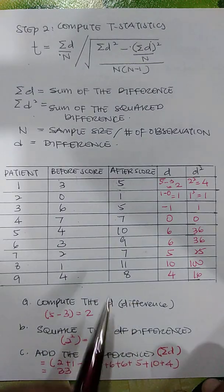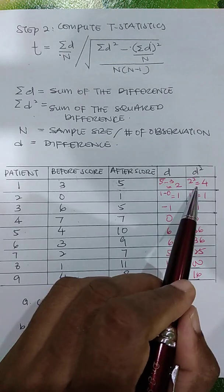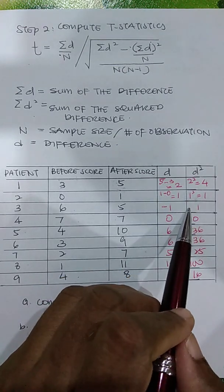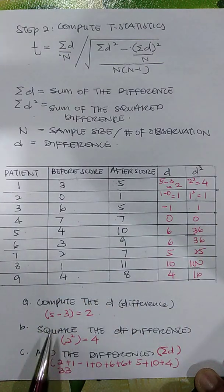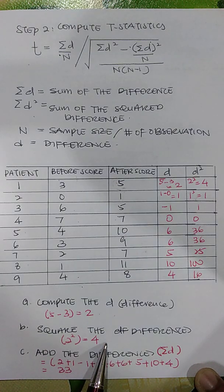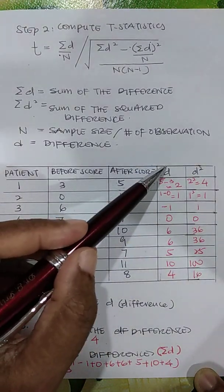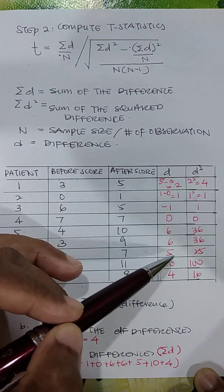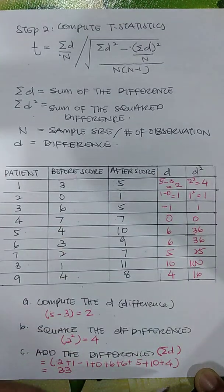Once you have the differences, you square each one. So 2 becomes 4, 1 becomes 1, negative 1 becomes 1, and so on down to the last score. Then you add all the difference values: 2 plus 1 plus negative 1 plus 6 plus 6 plus 6 plus 5 plus 10 plus 4. When you add all the differences, you get a sum of D equal to 33.